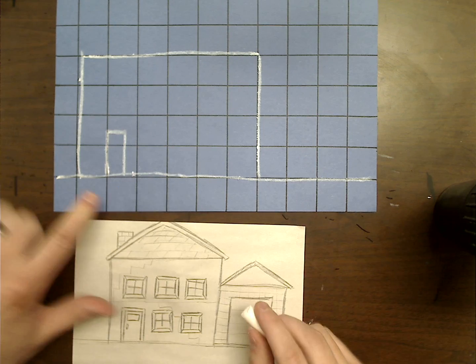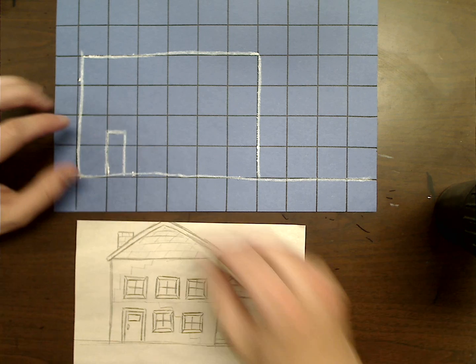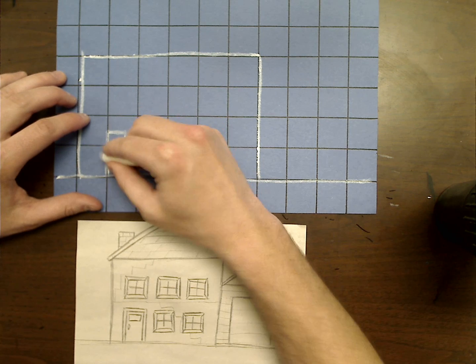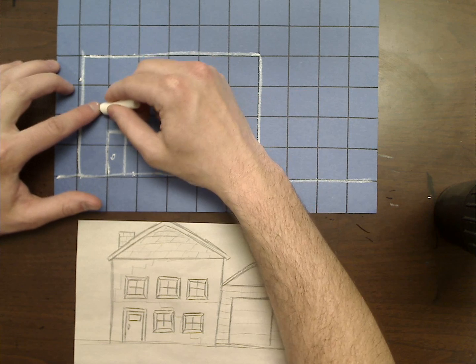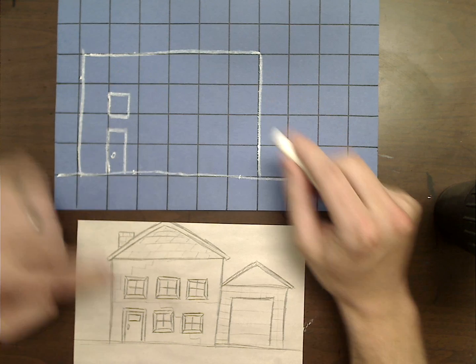But I can still tell with those lines, I know that I can make, if I keep the space right, I can make that door a nice rectangle. Same with the window, just make a smaller square inside of here and I've got my window.